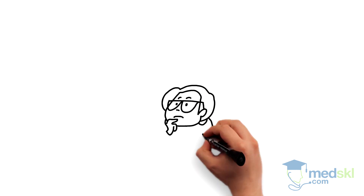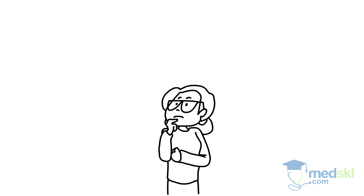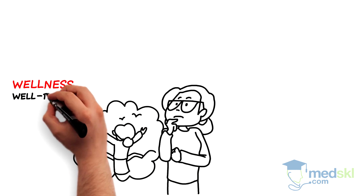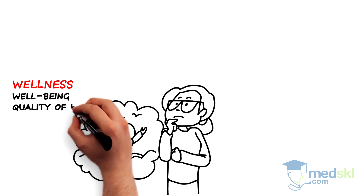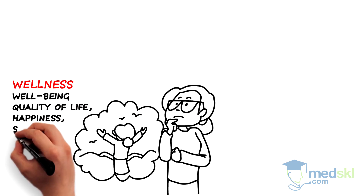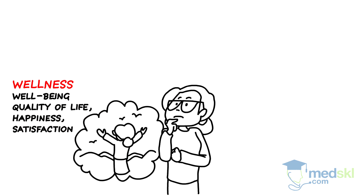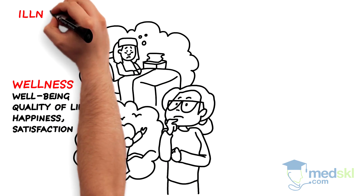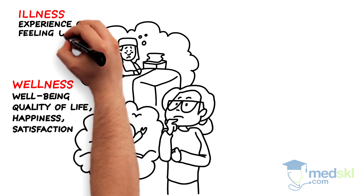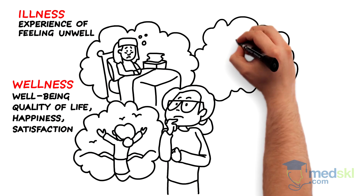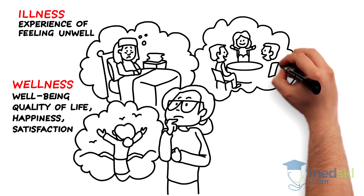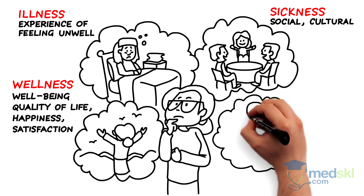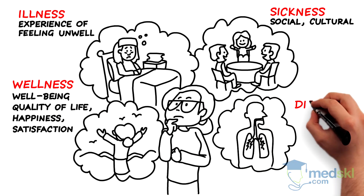Wellness refers to the presence of positive attributes in one's life — well-being, quality of life, happiness, and satisfaction. Illness is a person's subjective experience of feeling unwell. A sickness is a socially and culturally defined entity. Finally, a disease is the pathologic process going on in the body.